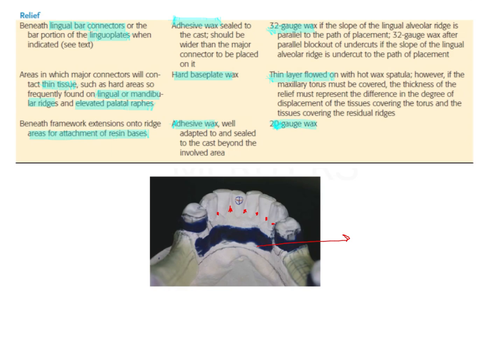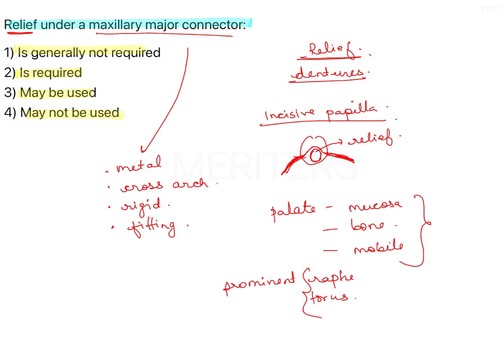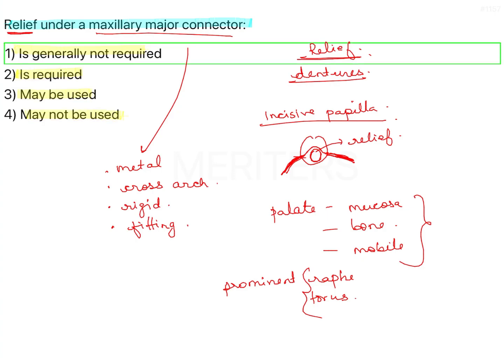Remember, torus and palatine raphae are the only two structures that need to be relieved for a maxillary major connector. So in this scenario, 'may be used' and 'may not be used' are not very definitive answers. In my opinion, the correct answer here should be 'it is generally not required' - it may be required in cases of prominent anatomical structures. The answer is one.